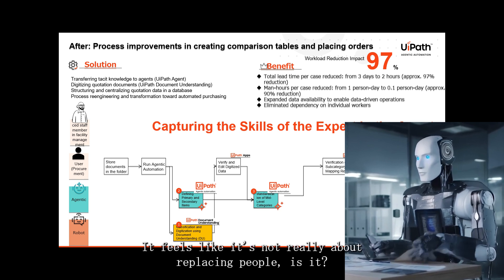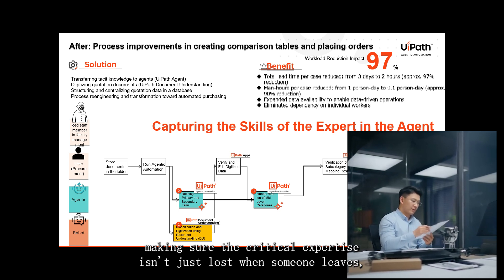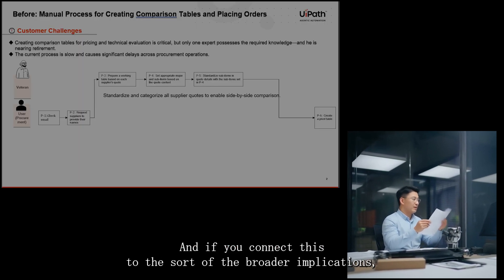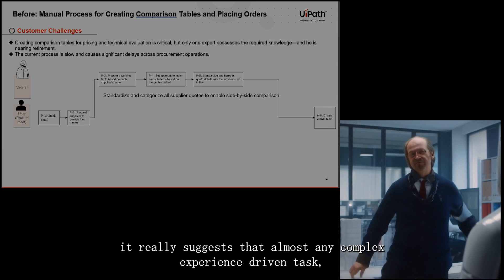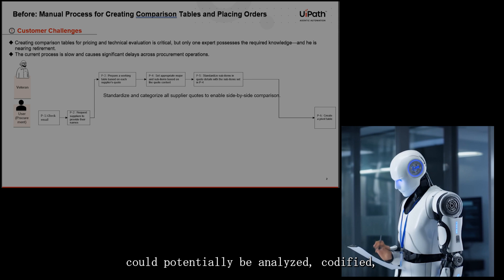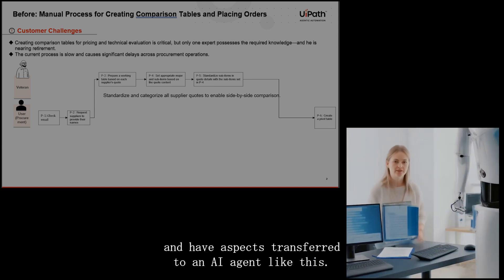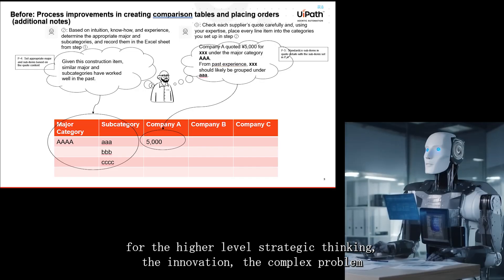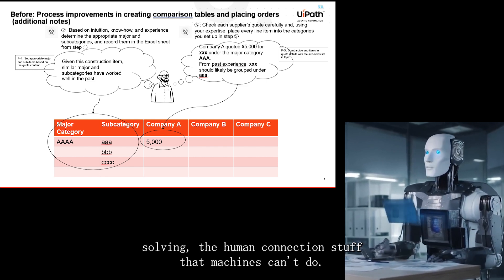It's not really about replacing people — it's about augmenting our capabilities, making sure critical expertise isn't lost when someone leaves but is actually leveraged and scaled up across the whole enterprise. This suggests that almost any complex, experience-driven task — medical diagnosis, legal analysis, complex engineering design — could potentially have aspects analyzed, codified, and transferred to an AI agent like this, freeing up human experts for higher-level strategic thinking, innovation, and complex problem solving.